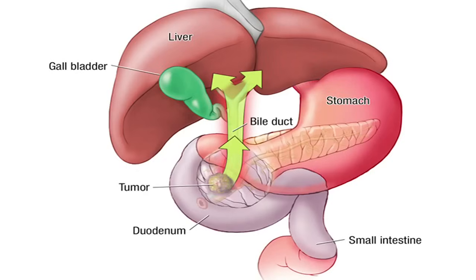At the same time, the stool color can become clay-colored, because now the bile — which is responsible for the color of the stool — does not get into the intestine. Therefore, the stool turns white.